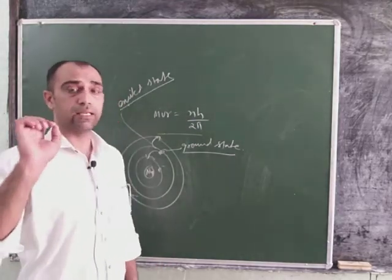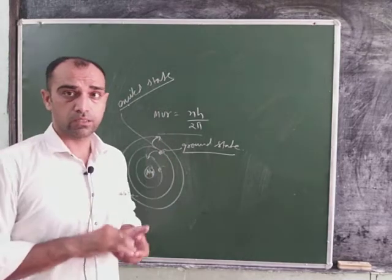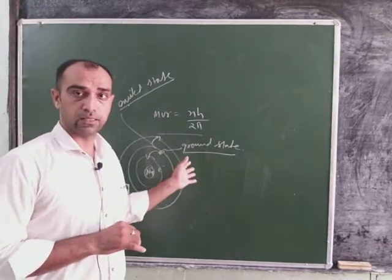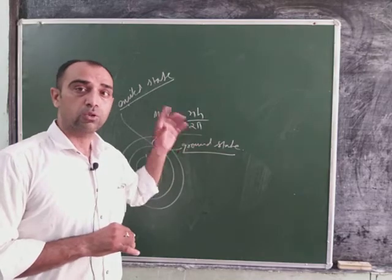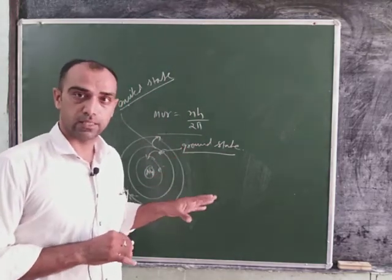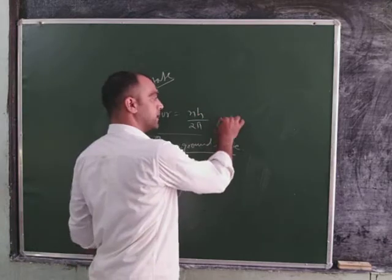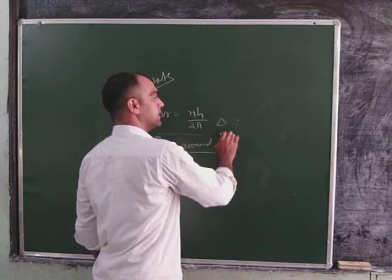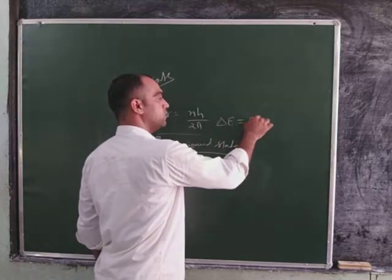Now the third thing is the difference between them. Now the energy is different, the first energy state is different, the second is different, the third is different. So the energy difference, the electron is different from the first and second. So the energy difference, we call delta E, that is equal to E2 minus E1.